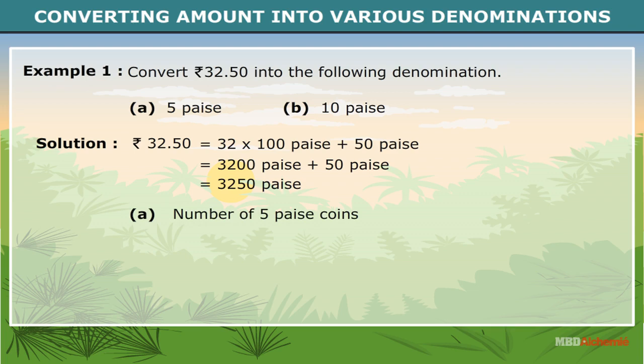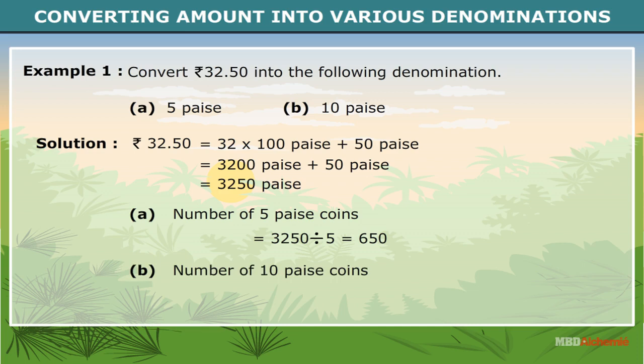A. Number of 5 paise coins is equal to 3250 divided by 5, which is equal to 650. B. Number of 10 paise coins is equal to 3250 divided by 10, which is equal to 325.